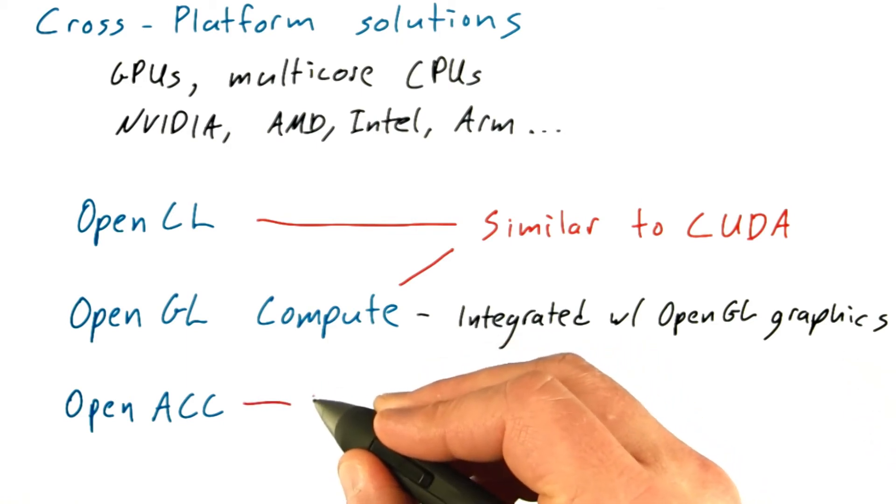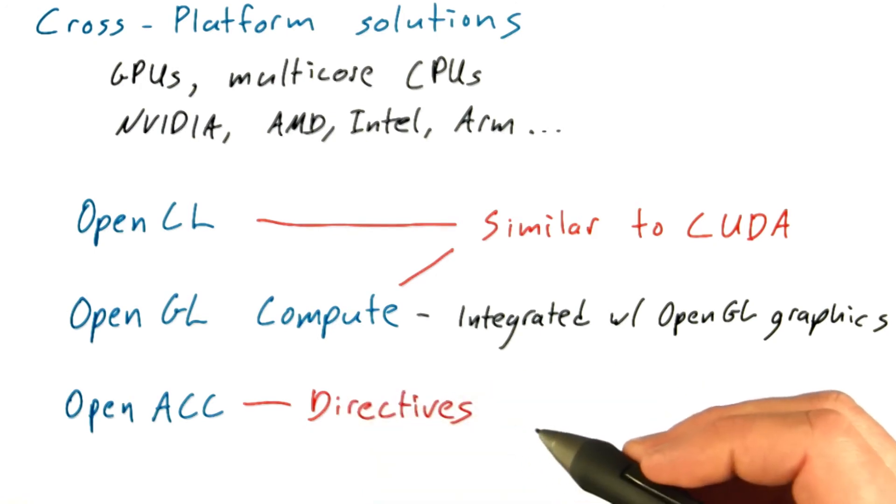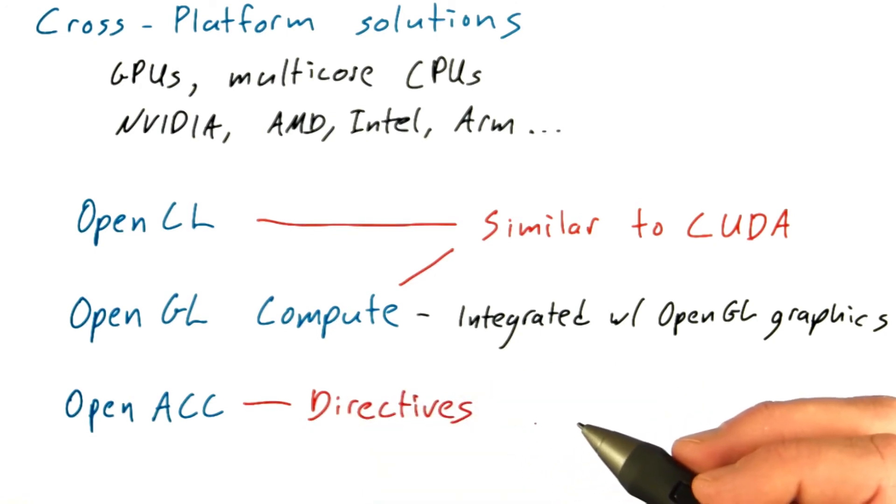Now, the third option, OpenACC, is a little different. This is a directives-based approach. Directives are annotations that the programmer puts into their serial code that help the compiler figure out how to automatically parallelize some of the loops.